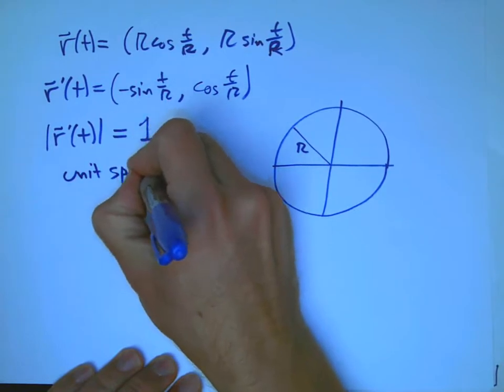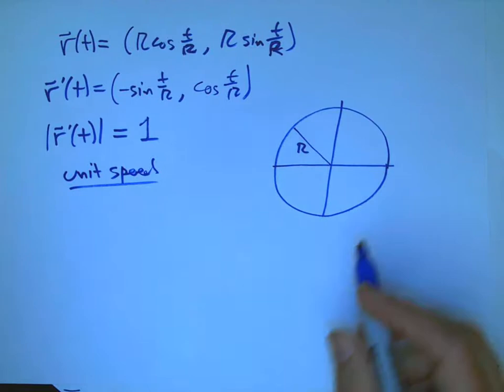So it is a unit speed curve. And a lot of nice things come out of that.